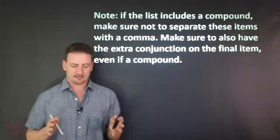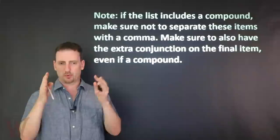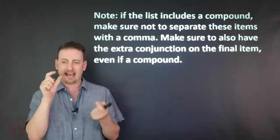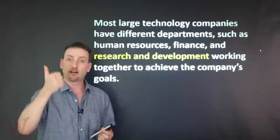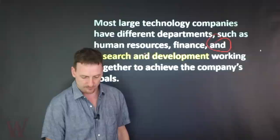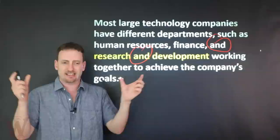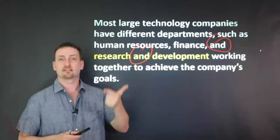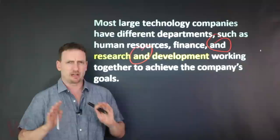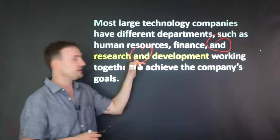Now, if the list includes a compound, make sure not to separate the two parts. For example: 'Most large companies have different departments such as human resources, finance, and research and development.' Here I have two ANDs. The second AND is part of the compound — 'research and development' is one item. So you still have three items: human resources, finance, and research and development. It's very clear.